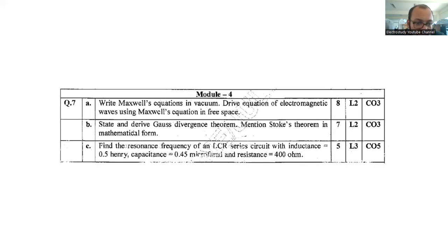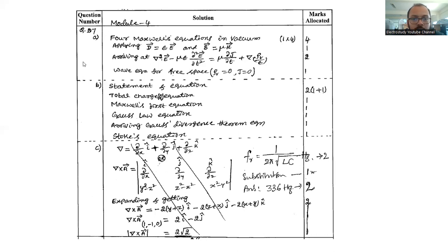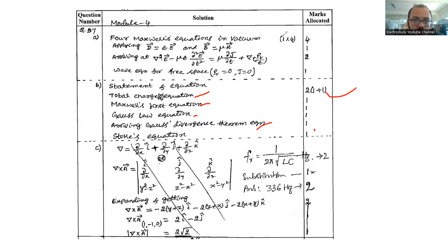Also in question 7a: State and derive the Gauss divergence theorem, and mention Stokes theorem in mathematical form. Write the Gauss divergence formula and the total charge equation, then apply the conditions step by step. You can prepare accordingly from the marks distribution provided.